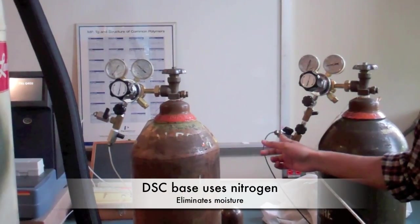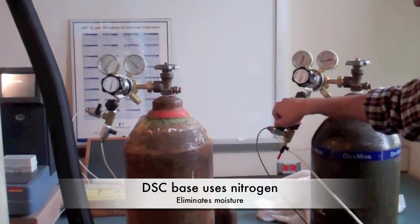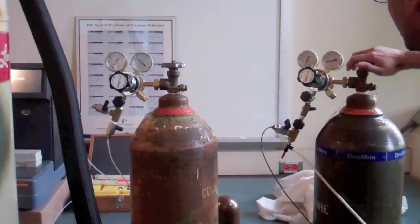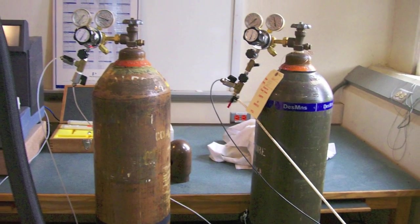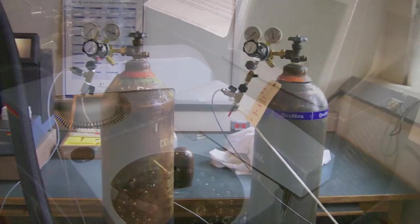The base of the DSC is circulated with nitrogen to eliminate any moisture. Only open the main bottle valve for this nitrogen tank. Consult a group member if experiments under a nitrogen purge are desired.